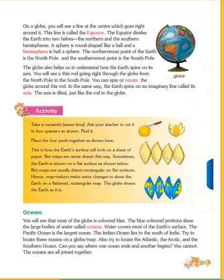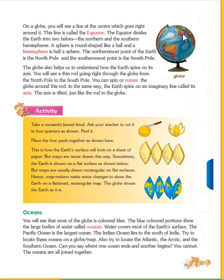On the globe you can see a small line which separates the two halves of the earth — two halves of the globe. This line is called the equator, which divides the earth into two halves, that is the northern hemisphere and the southern hemisphere.